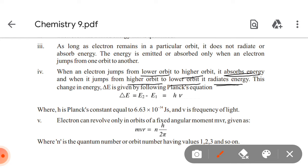This change in energy, delta E, is given by the following Planck's equation: delta E equals E2 minus E1 equals HV, where H is Planck's constant which equals 6.63 into 10 to the power of minus 33 joules per second, and V is the frequency of light.